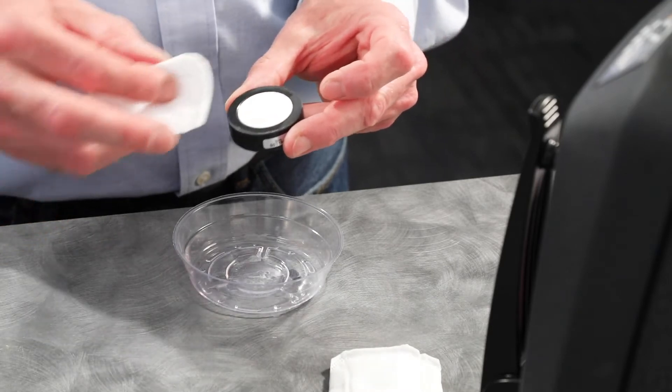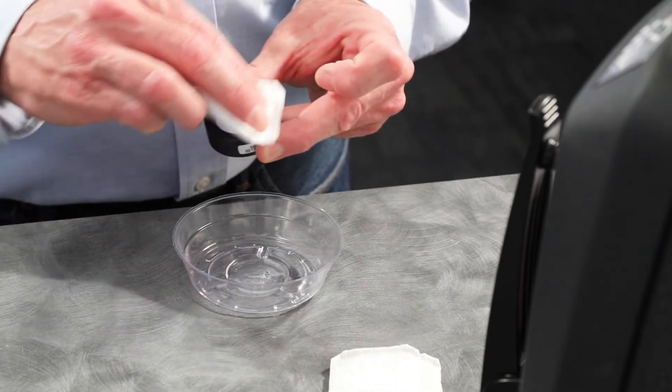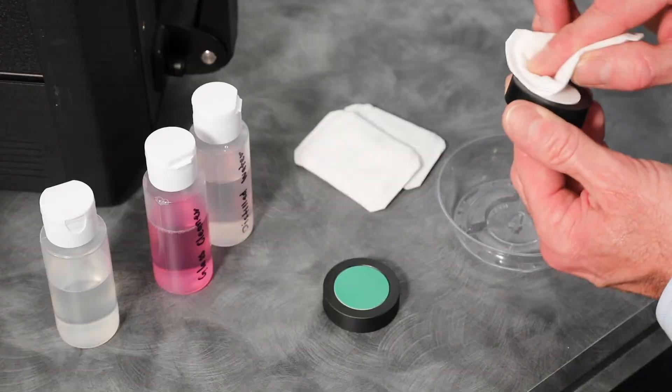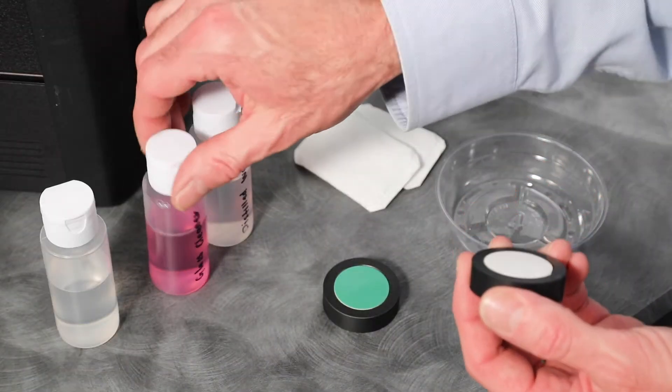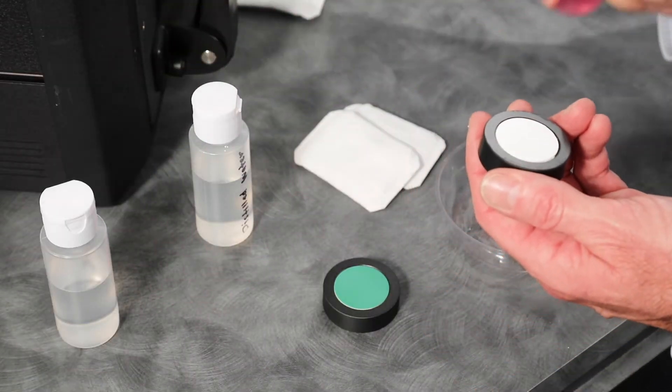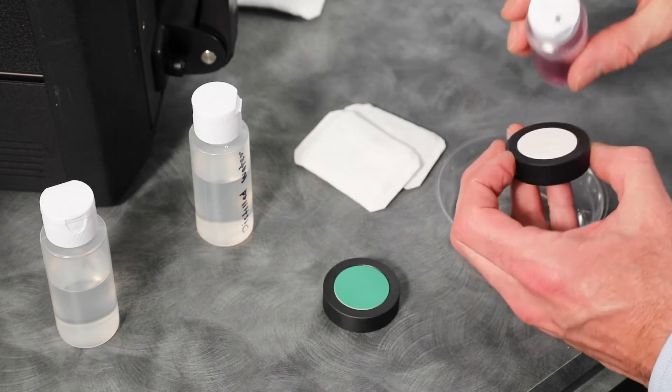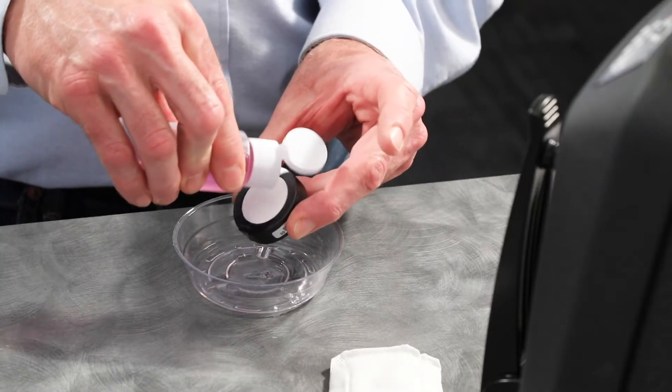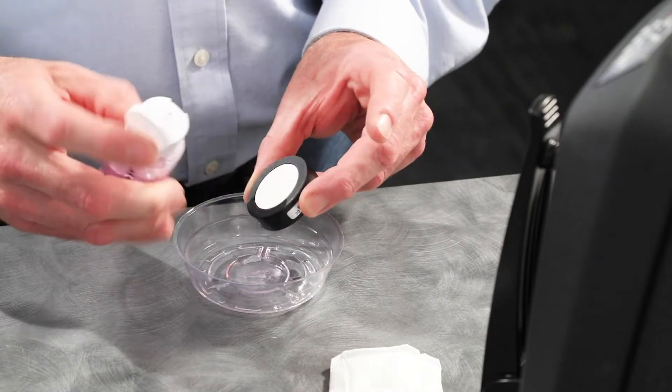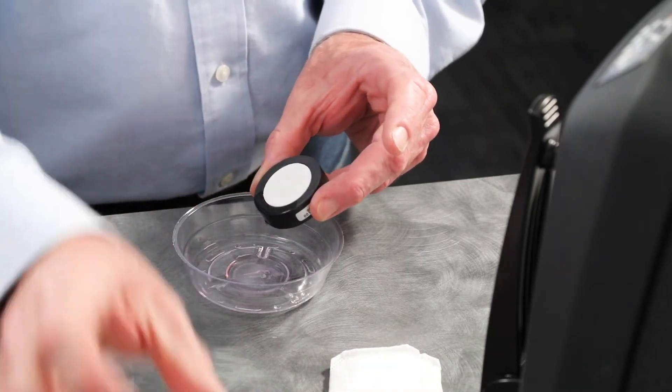Then use a dry portion of the wipe until the surface is dry. Next, apply the glass cleaner onto the surface of the tile. Use a new wipe to clean the entire surface.